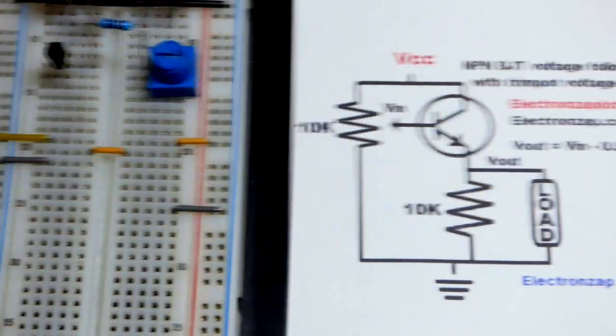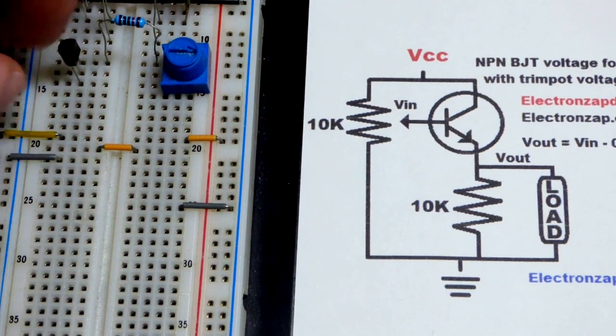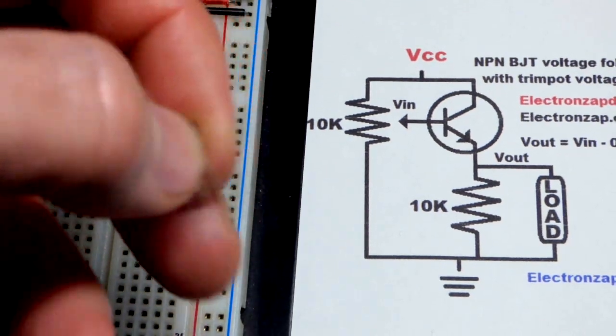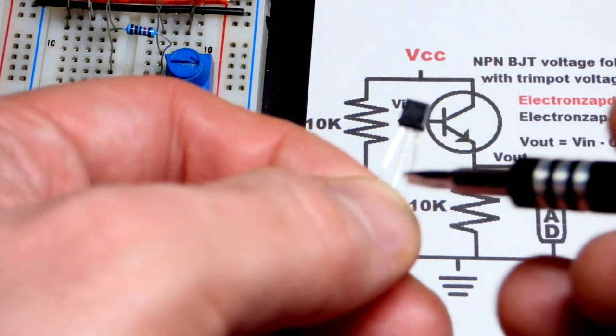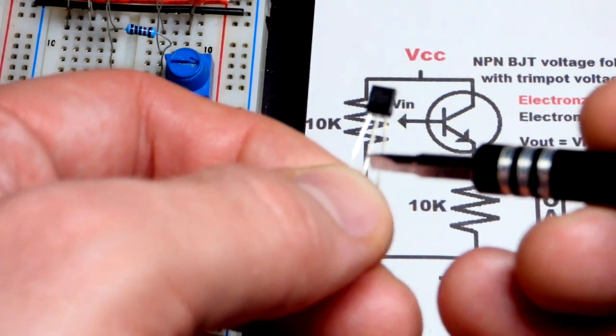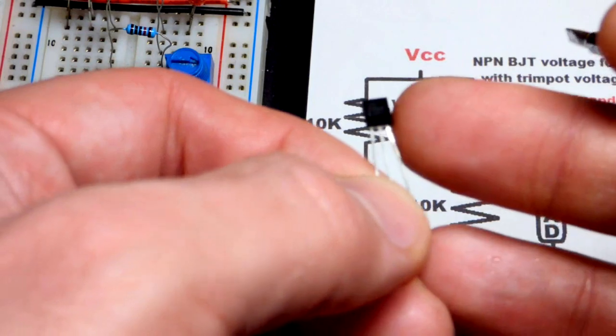It's really not complicated at all. And I have here a 2N3904 NPN bipolar junction transistor. Left pin is the emitter, middle pin is the base, right pin is the collector.